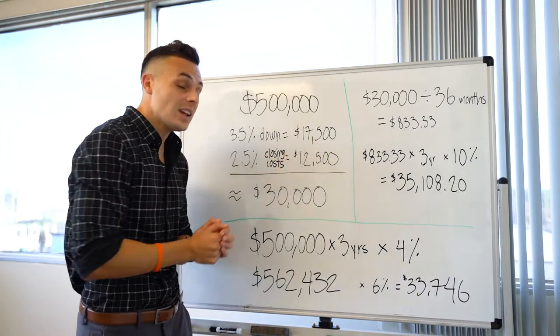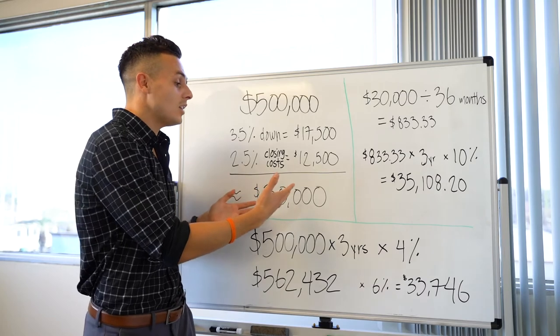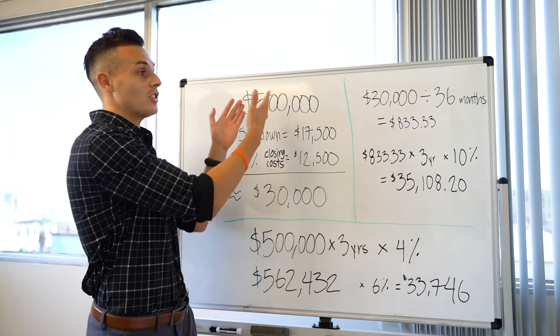Added together, you're looking at about $30,000 out of pocket that you need to save in order to purchase this $500,000 home.